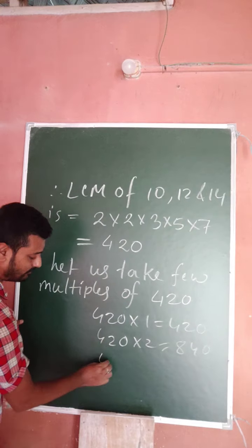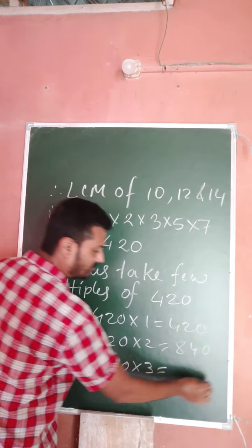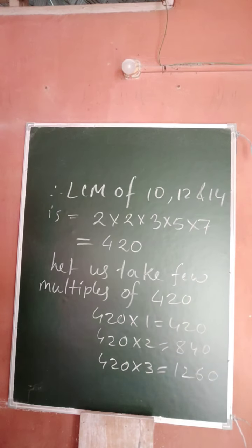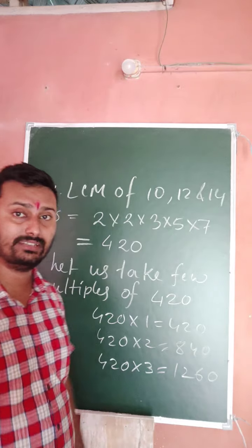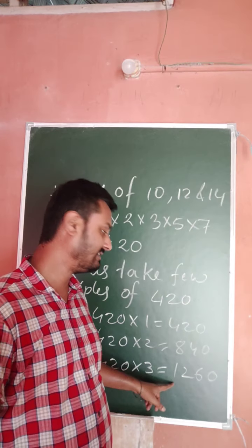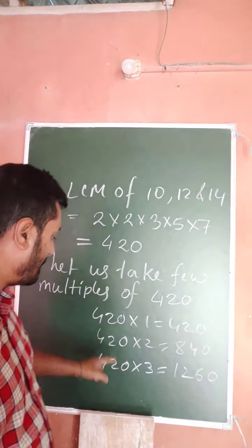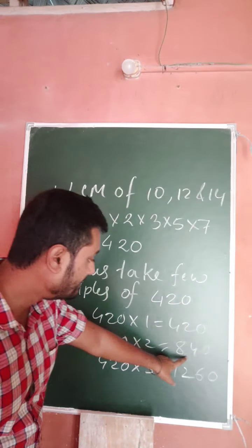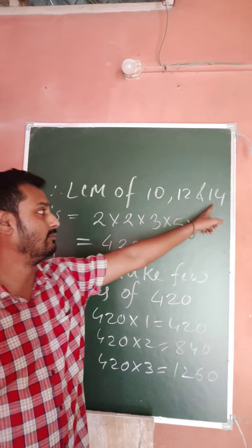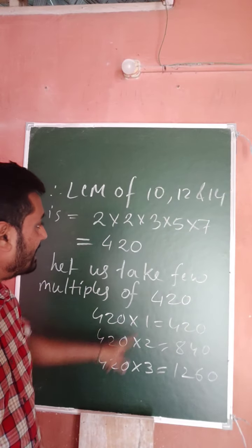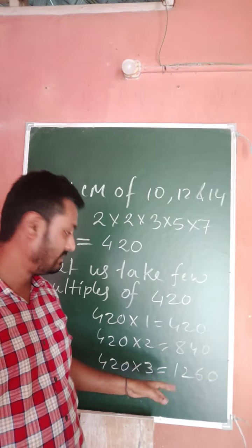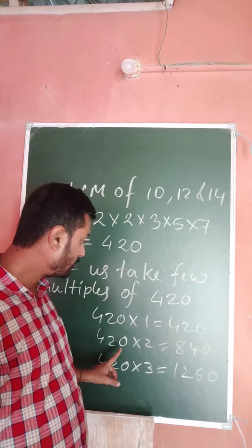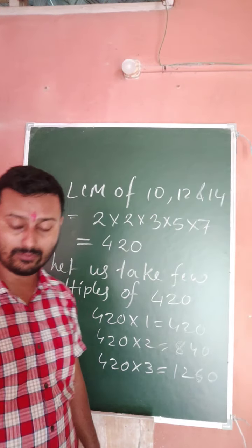420 × 3 = 1260, which is a 4-digit number. That means 420 × 3 is too large. But 840 is a 3-digit number, and 840 is exactly divisible by 10, 12, and 14, because 840 is a multiple of the LCM of 10, 12, and 14. Since 840 is divisible by 420, which is the LCM of 10, 12, and 14, it is exactly divisible.